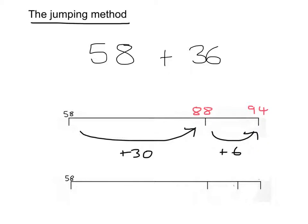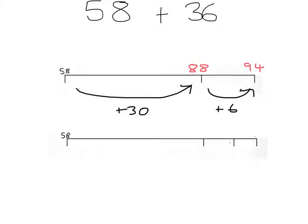Some people like to split the jumping process into more steps, and they would do something along the lines of this. First they would add the 30 and still get 88.